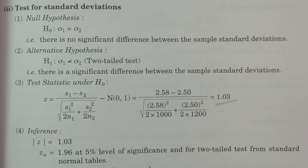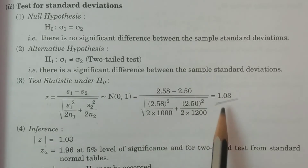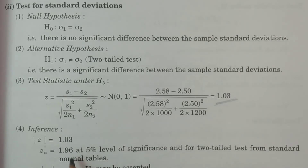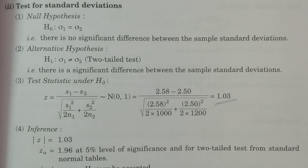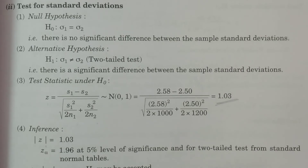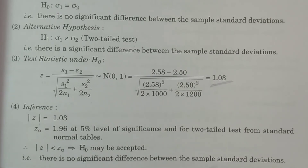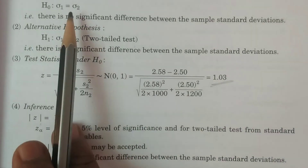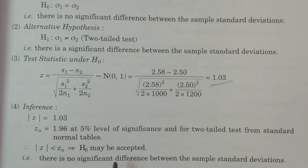Point 4, inference — comparison and conclusion. |Z| = 1.03. Z-alpha at 5% level, two-tailed test, from the standard normal tables = 1.96. Since 1.03 < 1.96, i.e., |Z| < Z-alpha, H0 is accepted. Conclusion: there is no significant difference between the sample standard deviations. So for both tests — test for means and test for standard deviations — H0 is accepted.